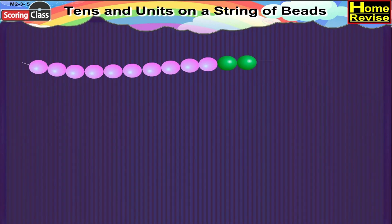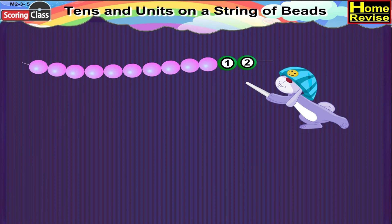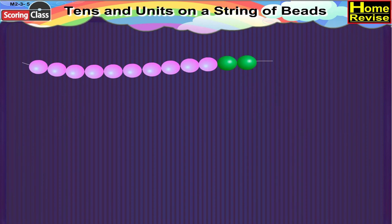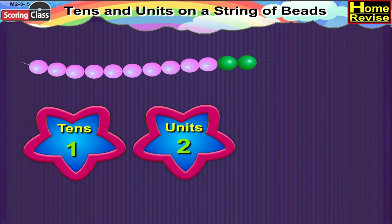In the last string, there are ten pink beads along with two green beads. So it is one ten, two units, or twelve.